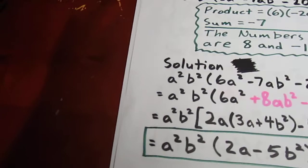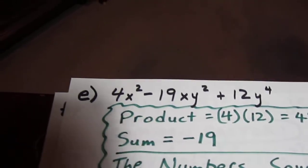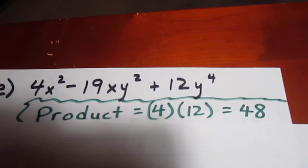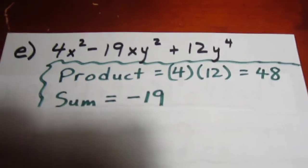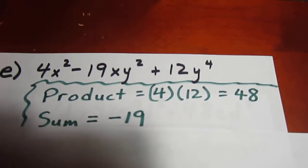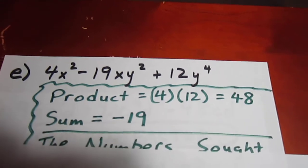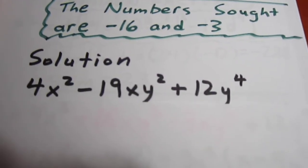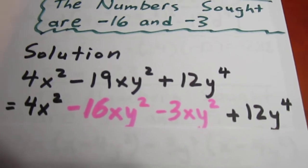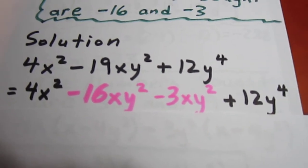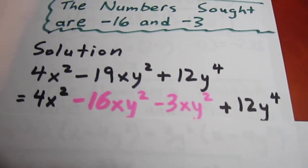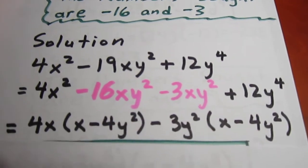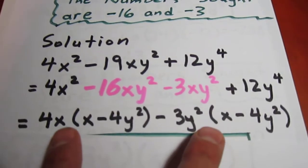The next question is 4x² - 19xy + 12y⁴. Our product is going to be 48, 4 times 12, and our sum is -19. The only way two numbers have a positive product and a negative sum is if they're both negative. In this case, -16 and -3. So we decompose -19xy² into -16xy² - 3xy². Common factoring out of the first two and common factoring out of the last two leads to the next line. Then we see we have the same binomial twice. So that becomes one of our factors, the other factor being 4x - 3y².